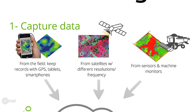Also from satellites with different resolutions — that's a very valuable source to keep track of the current season, to see the history of the crop, to summarize what was the crop evolution into productivity maps. We make extensive use of satellites. We also facilitate and automate the processing from sensors and machine monitors from your seeding, fertilizer, liquid and solid fertilizer, spraying, agrochemicals, and harvesting combines. All of that data goes into the system.